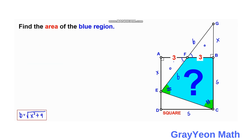Next, from point G we draw a horizontal line, and from A we draw a line upward until it meets that horizontal line — we call that intersection point H, and this should be perpendicular. The length HG is also S and the length AH is also X.